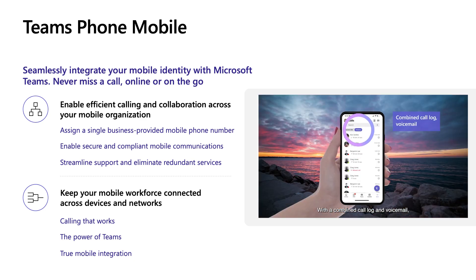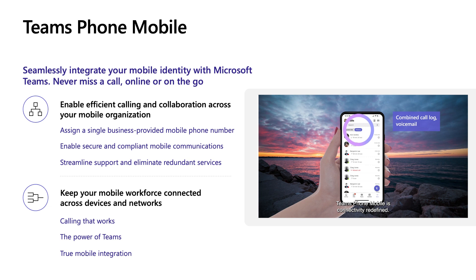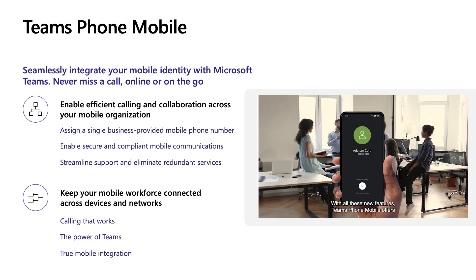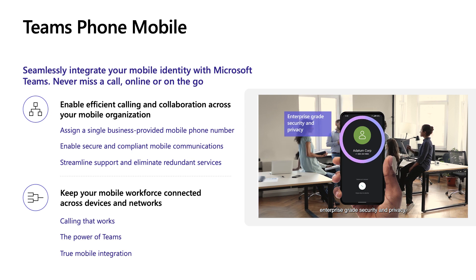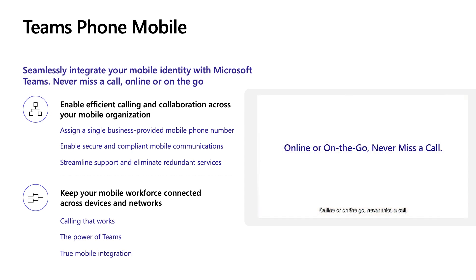With unified presence, you can let colleagues know whenever you're available and whenever you're not. Teams Phone Mobile is now available with Rogers in Canada, Telia in Sweden, Verizon in the U.S., Deutsche Telekom in Germany, and Swisscom in Switzerland. BT in the U.K. will launch soon.